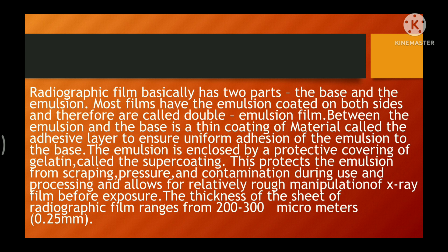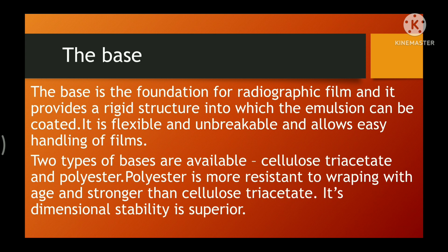Now let's discuss the most important basic parts of radiographic film — the base and the emulsion. The base is the foundation for radiographic film; it is the one on which the radiographic film is constructed. It provides a rigid yet flexible, unbreakable structure that allows easy handling of films. Basically, two types of bases are available: cellulose triacetate and polyester, but we mostly use polyester as a base.